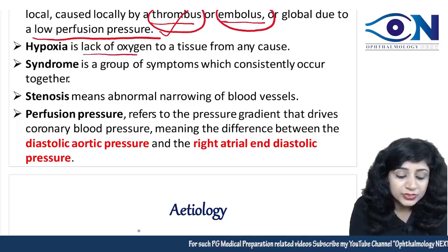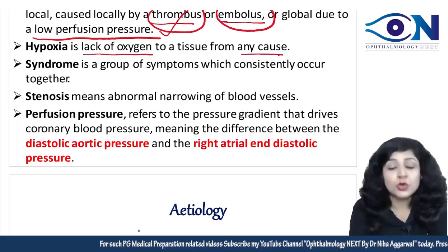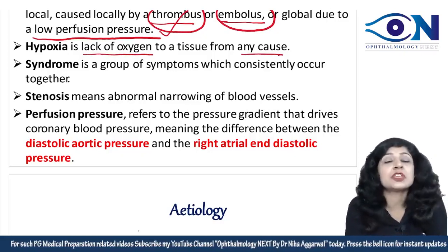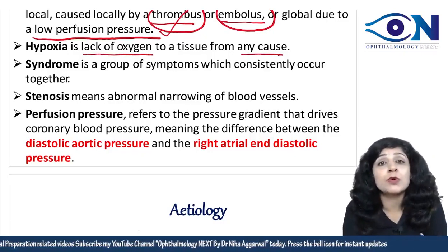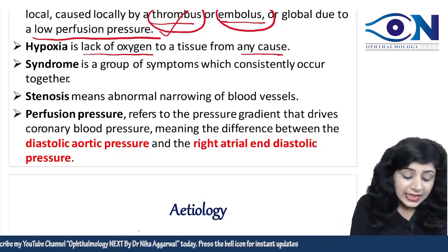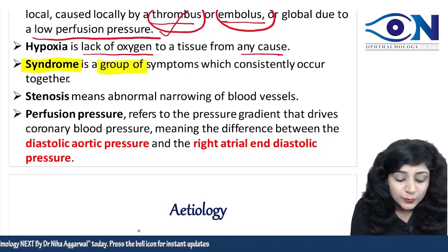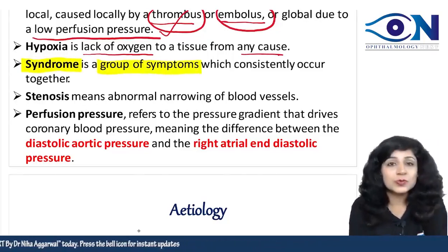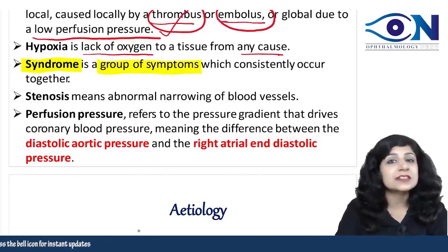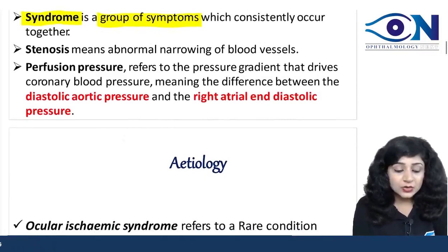Hypoxia is the lack of oxygen to any tissue due to any cause. There is a difference between ischemia and hypoxia, though both are interrelated. A syndrome means a group of symptoms occurring most of the time together. Stenosis means abnormal narrowing of blood vessels.